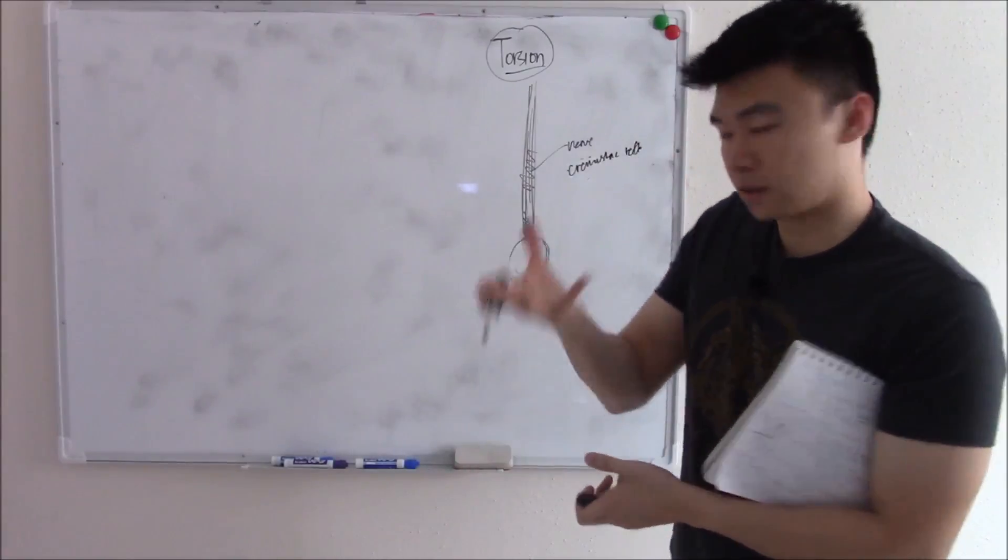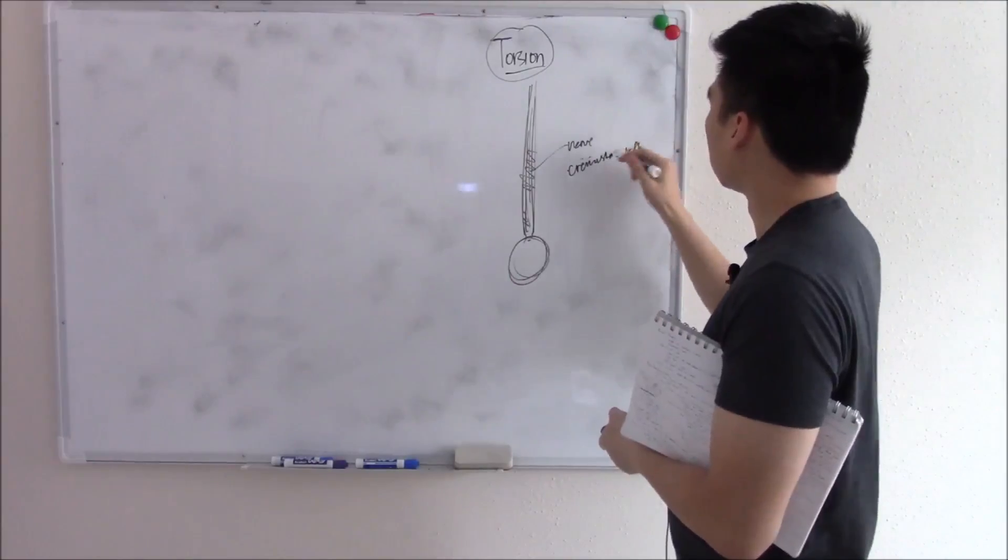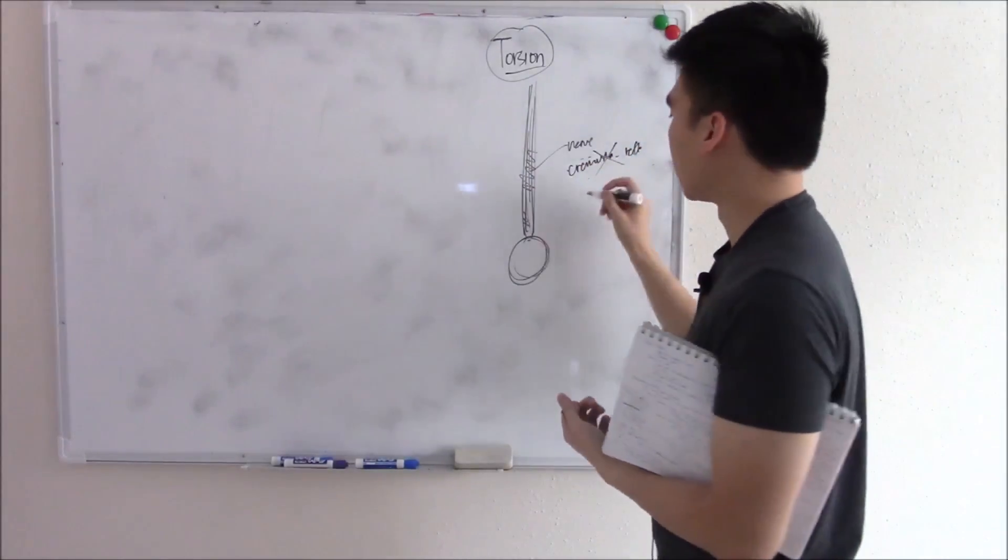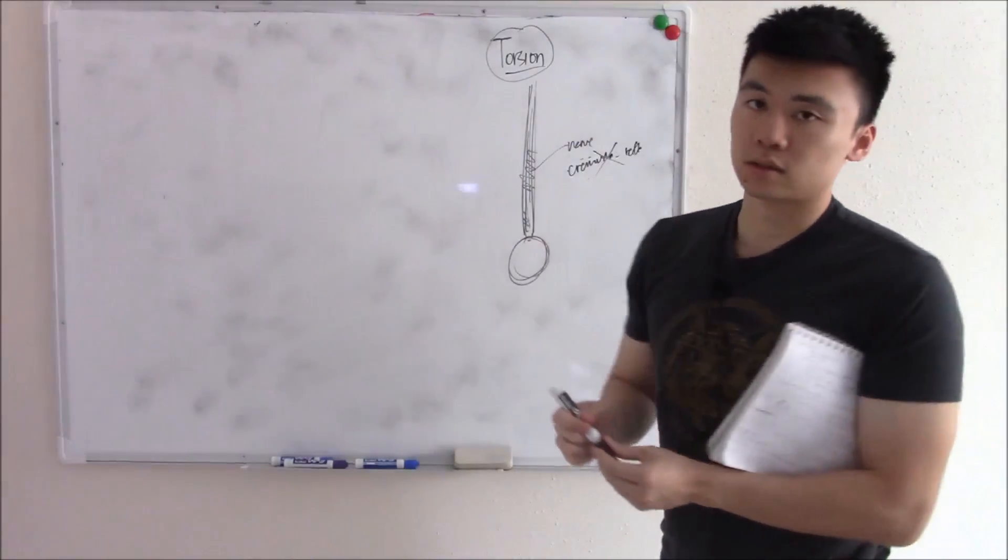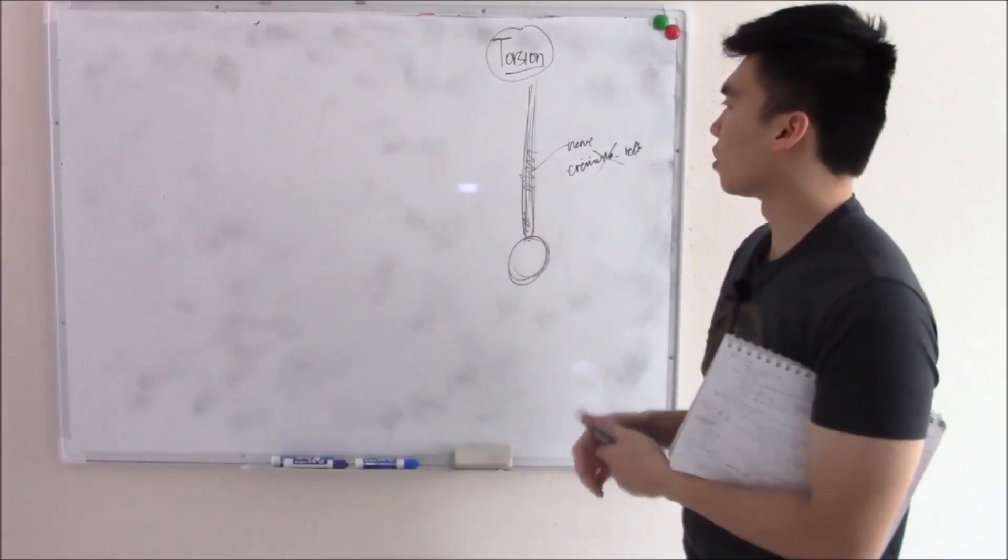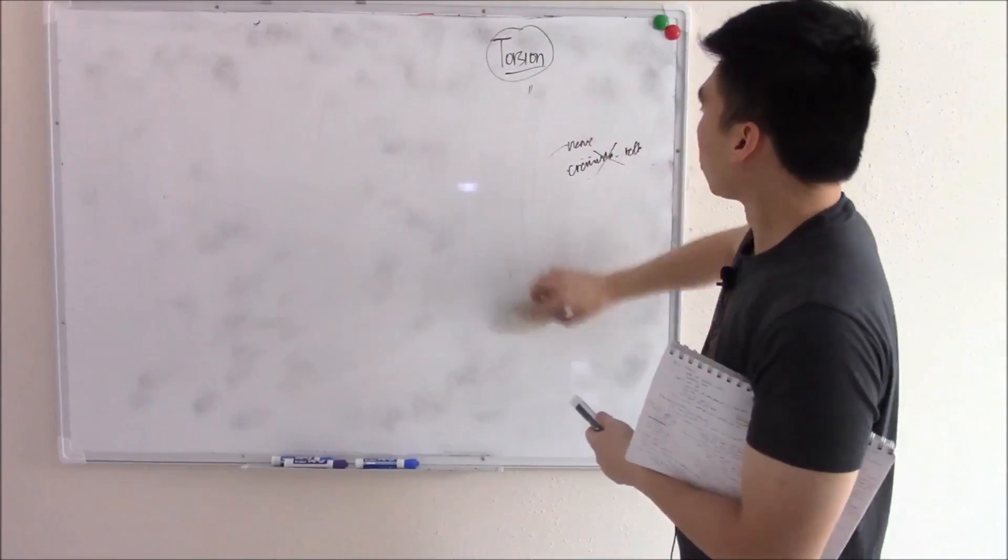That's when you stroke your thigh and your testicle retracts. So that's gone. But more importantly, because you're twisting the blood vessels, you can have eventually necrosis if you don't, I guess, untwist. And that's the most important part. So it's a surgical emergency. And that is torsion.